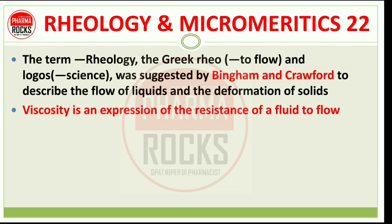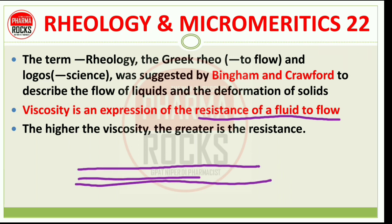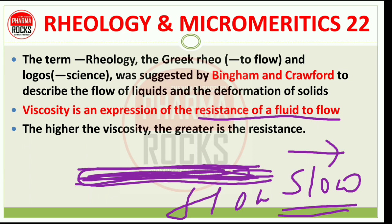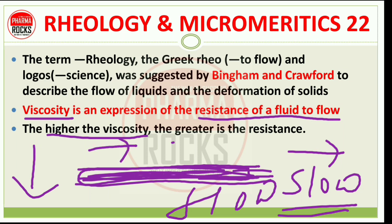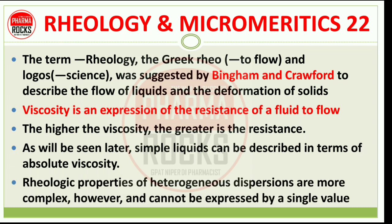Viscosity is an expression of the resistance of a fluid to flow. When any liquid flows through a pipe, there is resistance inside — some liquids flow fast, some flow slow. That resistance to flow is due to viscosity. Higher viscosity means less flow; lower viscosity means it flows faster. The higher the viscosity, the greater the resistance. Simple liquids can be described in terms of absolute viscosity. Rheological properties of heterogeneous dispersions are more complex, however.